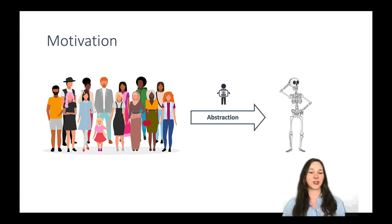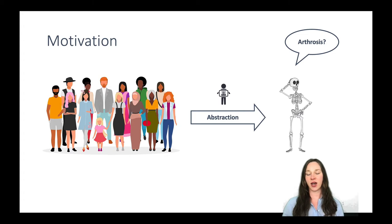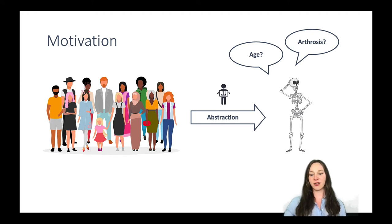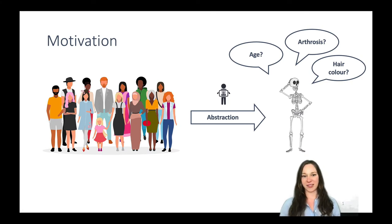It does not matter which skeleton it is. Based on the skeleton we can detect some sort of arthrosis, or we can talk about how old the person is. All of those properties are detectable in the skeleton. For example, if we want to talk about hair color, that would not be possible just by looking at the skeleton.